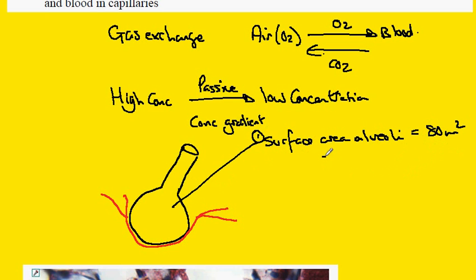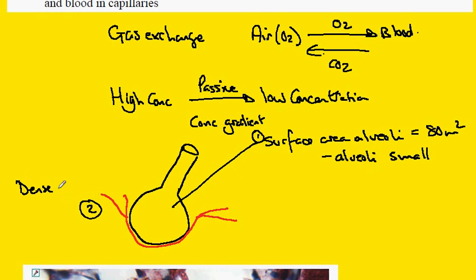This large surface area is achieved because the alveoli are small. The second adaptation is the dense network of blood vessels to pick up gases like oxygen and to deliver carbon dioxide.